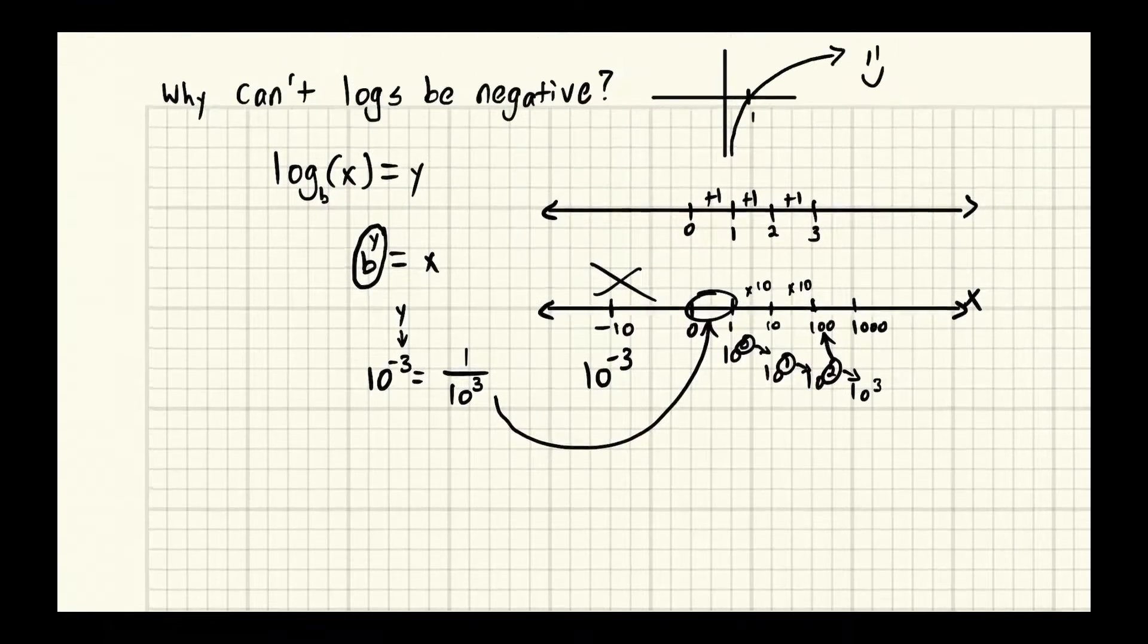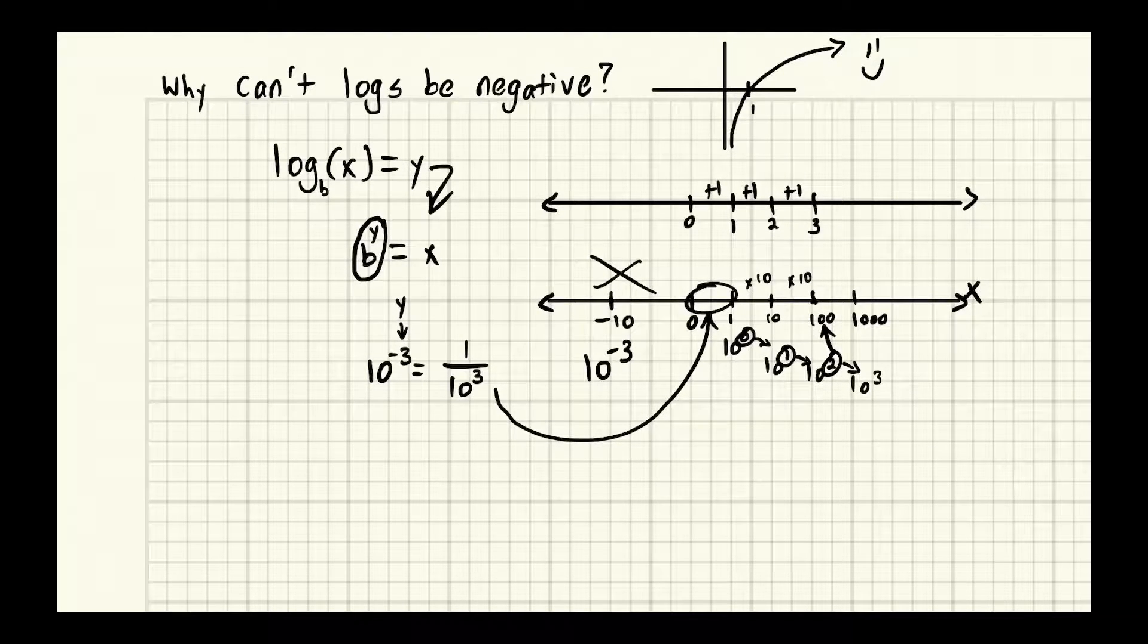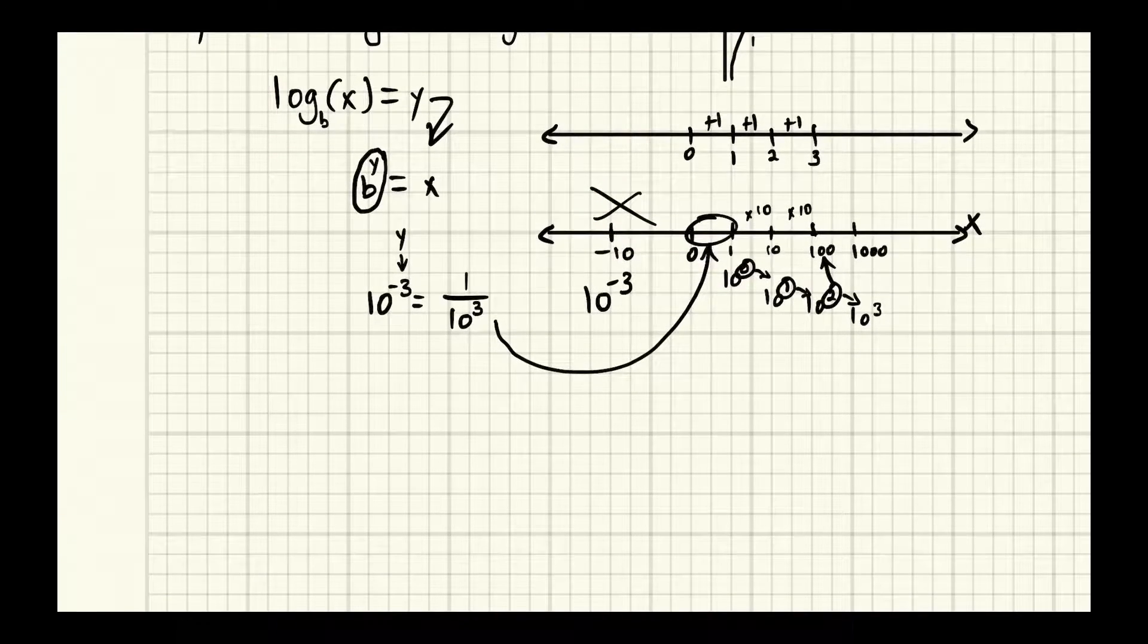So we know that the log is really this. And so if we have this, we're in base 10. So b is 10 to the power y equals, and we said x is negative 10.